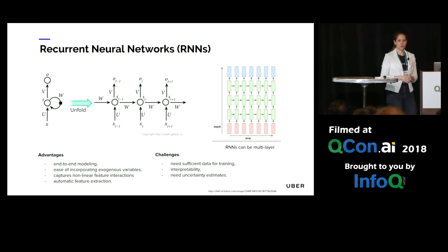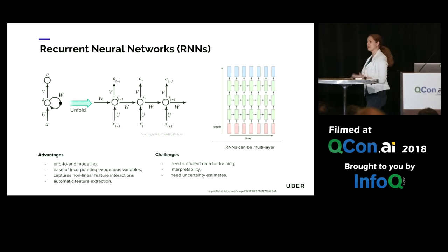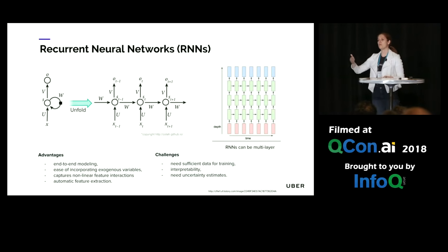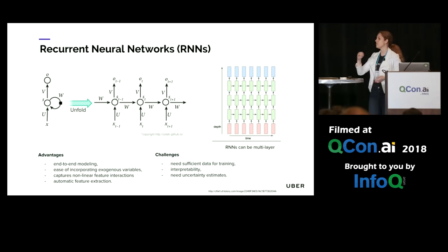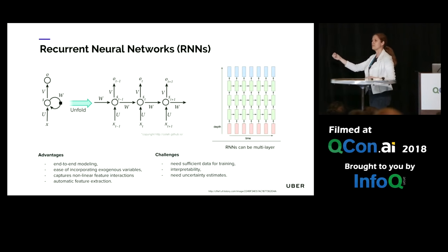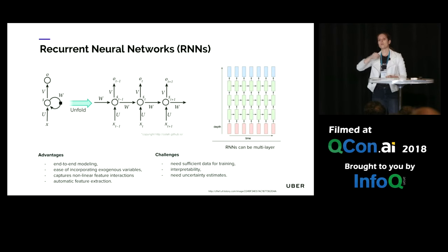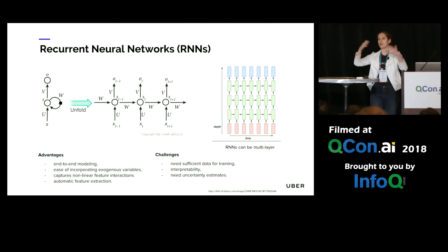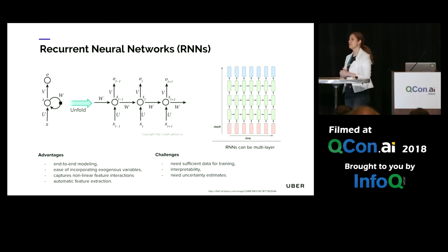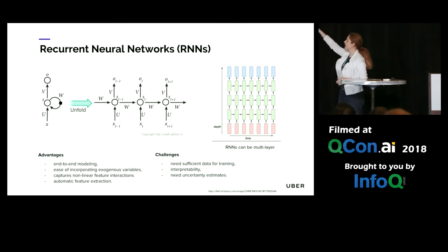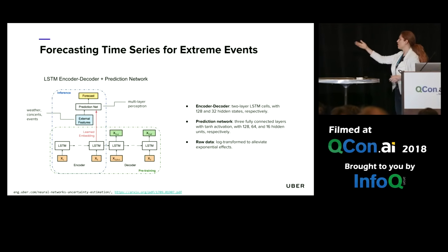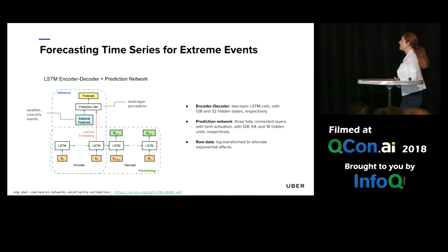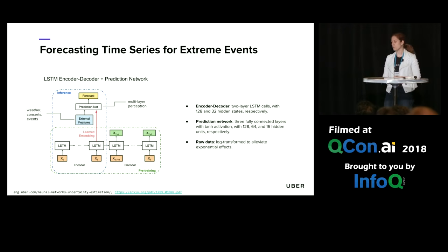Enter recurrent neural networks — a neural network that, as the name suggests, can deal very well with sequences. The way it does this is by taking the previous state s(t-1) and feeding it into the next state s(t), allowing it to retain some memory of the time series. If one wants to capture the temporal hierarchical structure of time series, multi-layer approaches are often used, as shown here on the right-hand side.